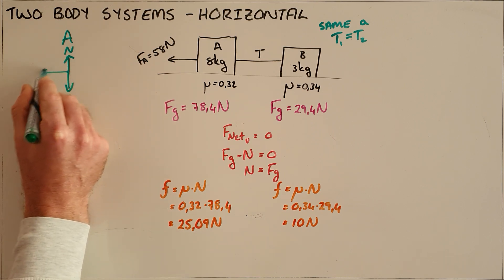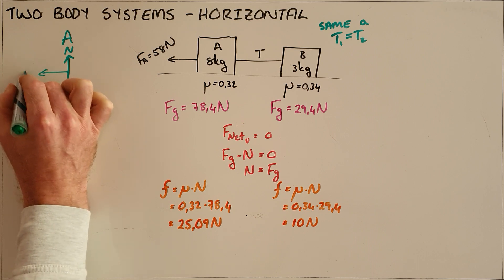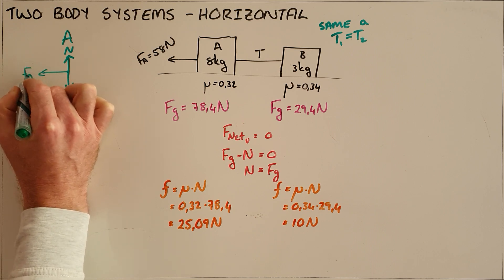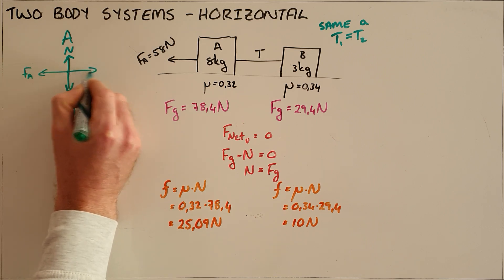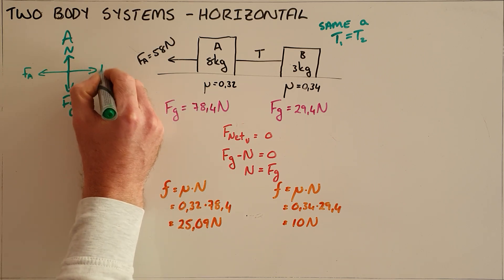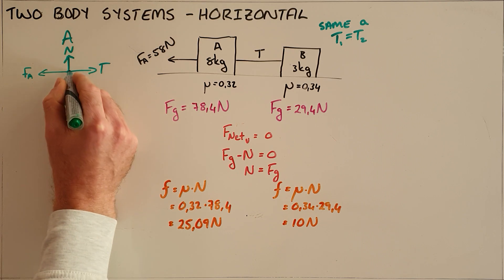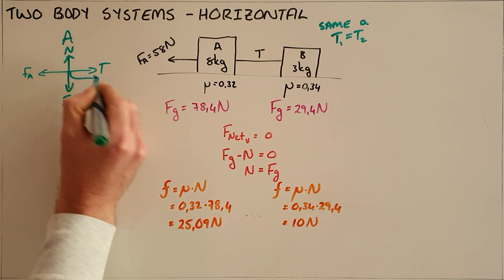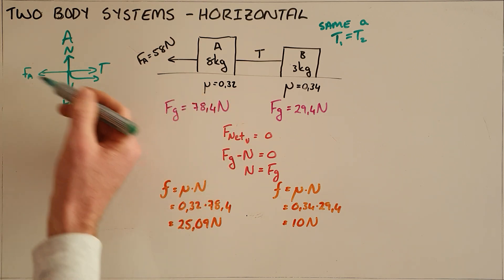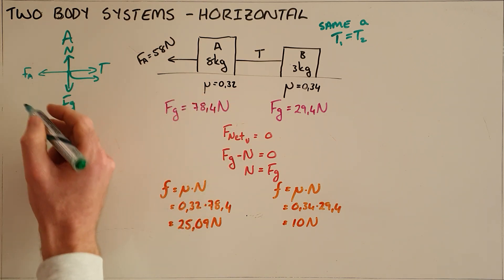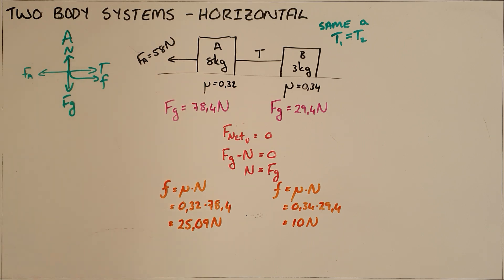We can see that there is an applied force pulling object A to the left. There is a tension force pulling the object to the right, and since this object's motion or attempted motion is to the left, there must be a frictional force acting to the right.